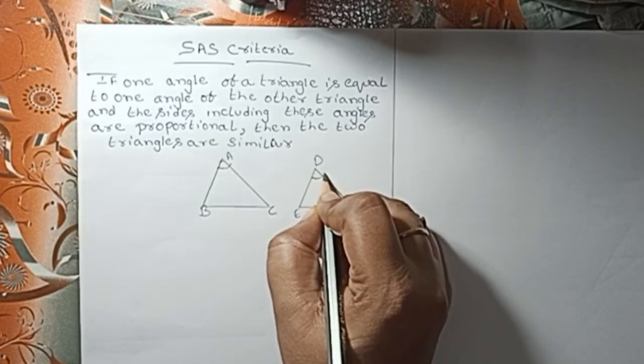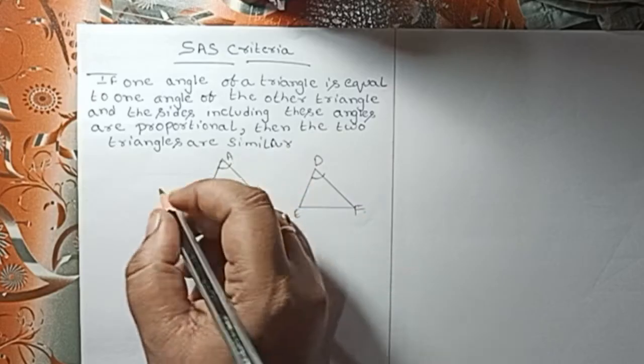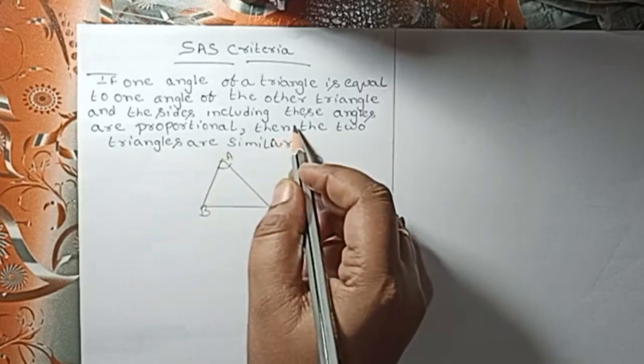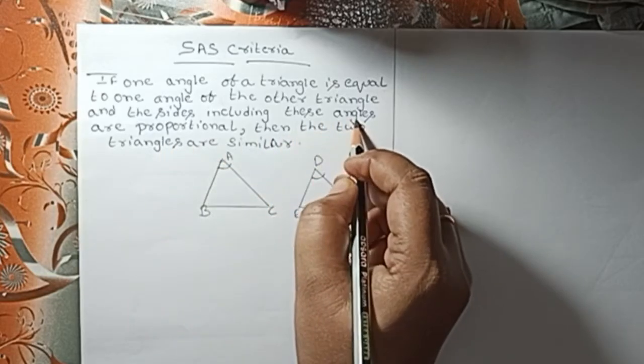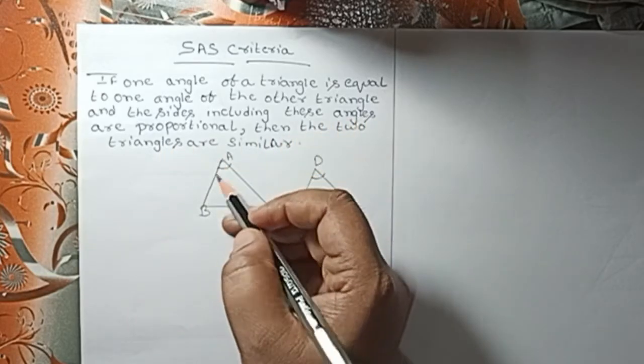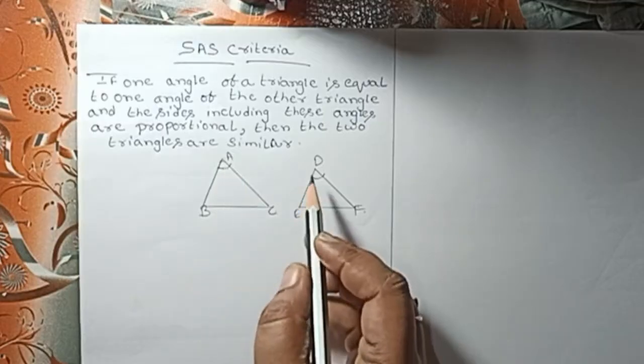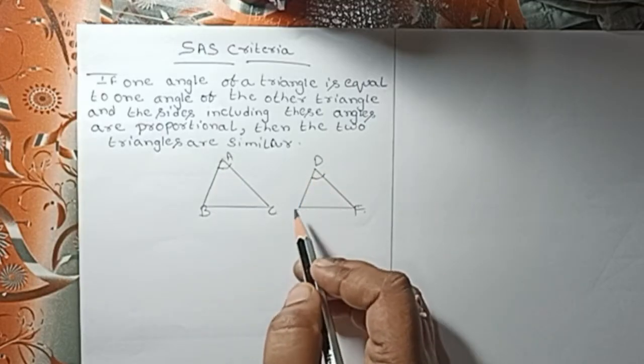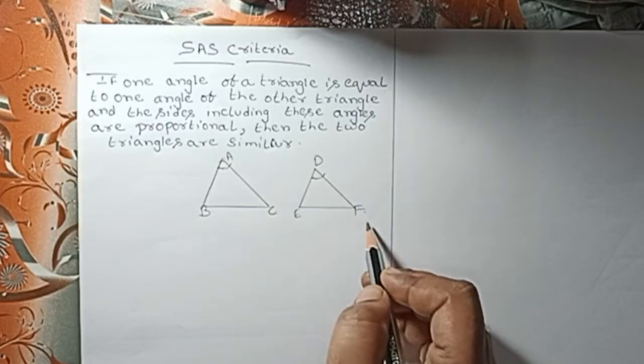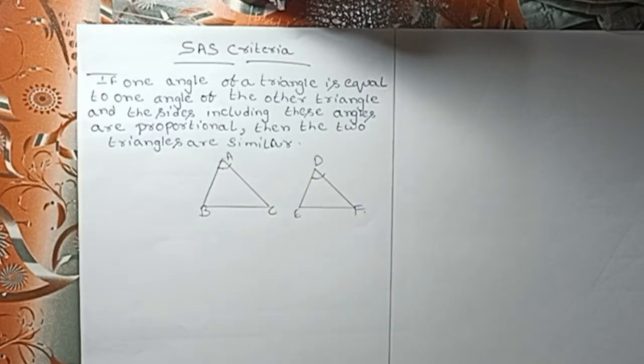The sides including these angles: for the first triangle, the sides including angle A are AB and AC. For the second triangle, the sides including angle D are DE and DF.